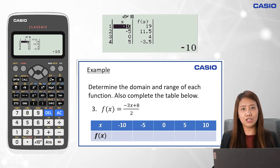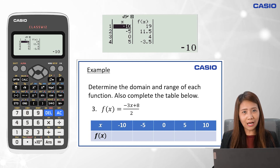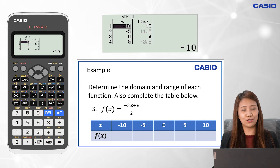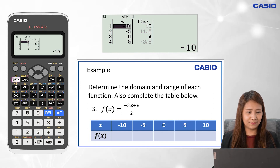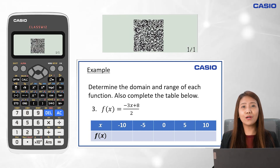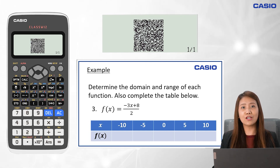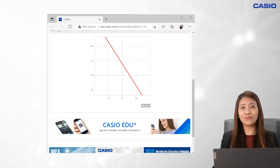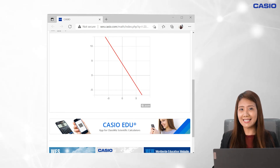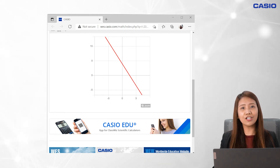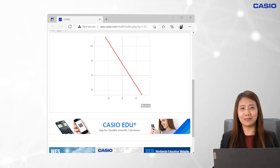To identify the domain and range, sketch the graph of the function. To graph the function, we press Shift then Option. A QR code will appear. Click on the QR code and it will direct us to Casio EduPlus with a graph of the function. From the graph, we can already identify the domain and range of the function. Since it's a linear function, the domain is all real numbers and the range is also all real numbers.